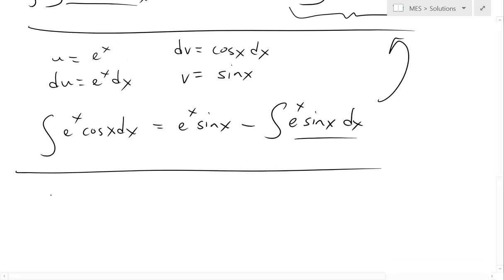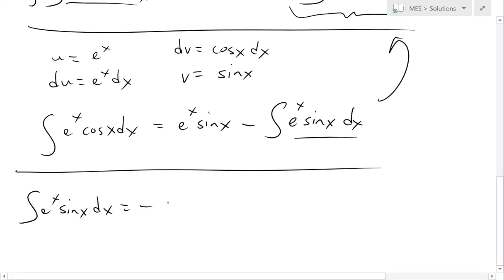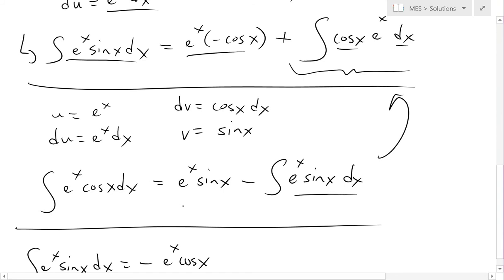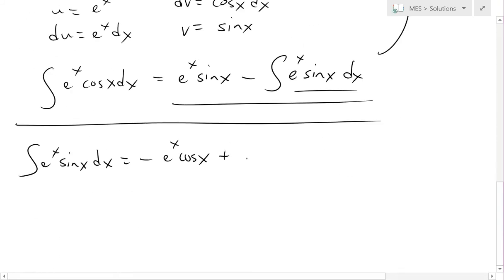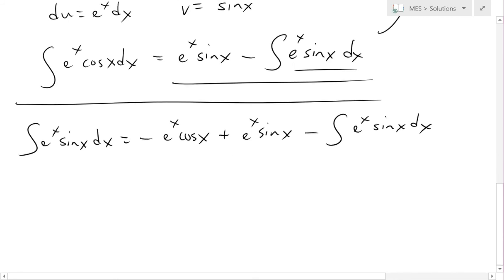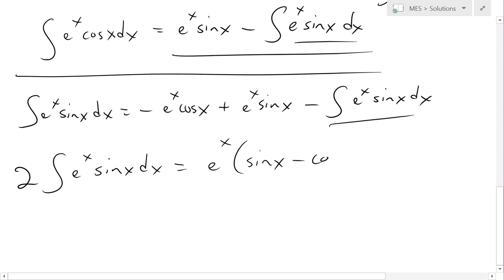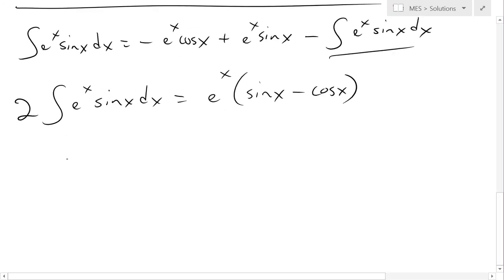Now we can plug this back into the first equation. Overall, the integral of e^x sine x dx equals negative e^x cos x, plus e^x sine x, minus the integral of e^x sine x dx. We now have the same integral on both sides, so we move it to the left: two times the integral of e^x sine x dx equals e^x times (sine x minus cos x).